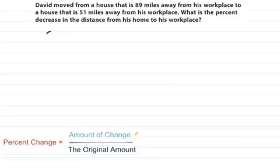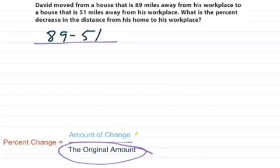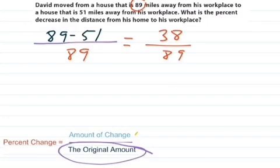I write the information in. The amount of change, it's going to be 89 miles away from his workplace, minus 51, which is where he is currently. So his distance is decreasing. And we put that over the original amount. The original amount is not the smaller amount always. It's where we started in our word problem. The original amount here is 89. So we do 89 minus 51, and we should get 38. We're going to put that over 89. Then all we need to do is divide 89 by 38.